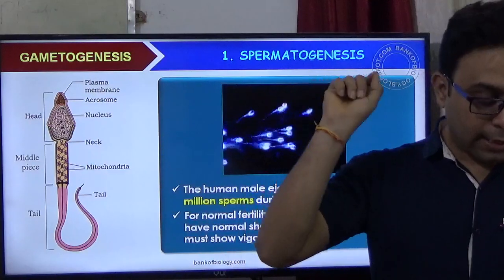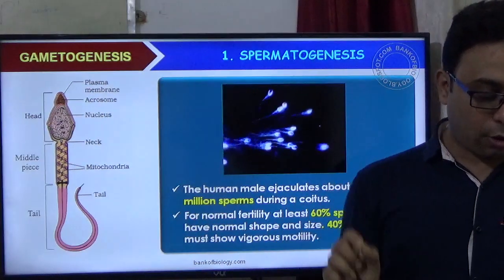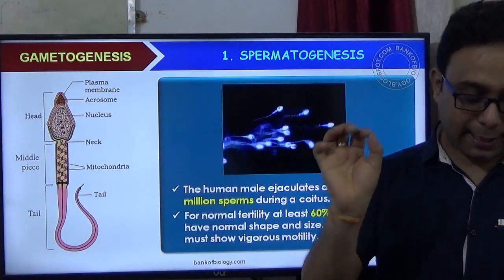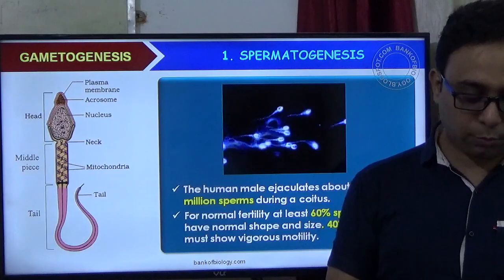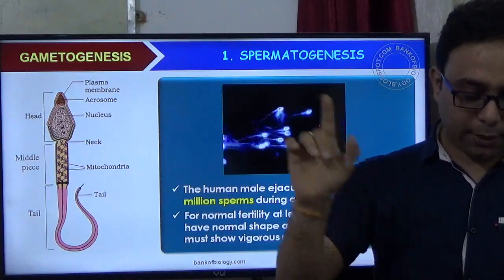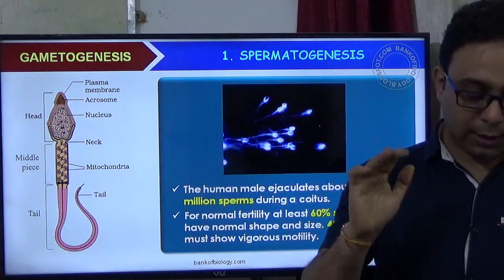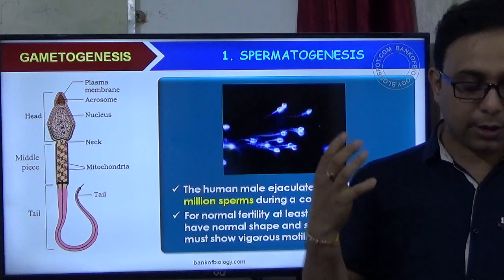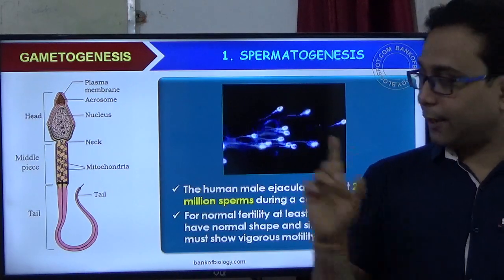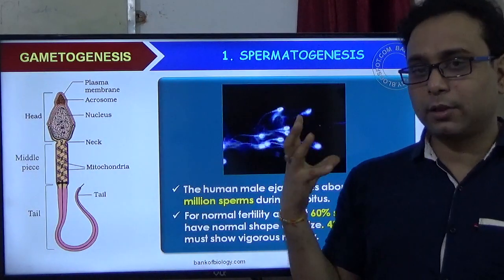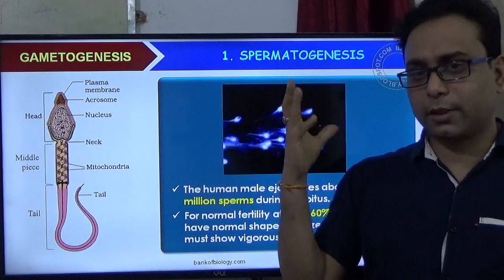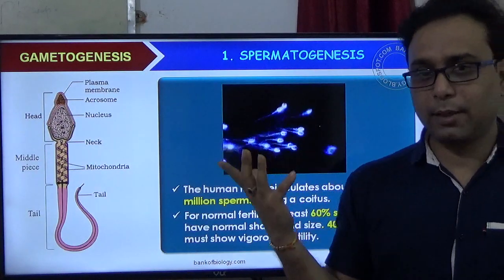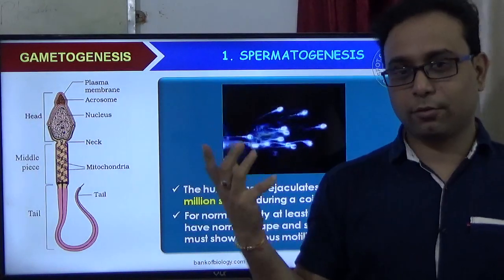MCQ Question 2: Acrosome is a type of — Option A: lysosome. Option B: flagellum. Option C: ribosome. Option D: basal body. The correct answer is Option A — lysosome — because the acrosome contains digestive/lytic enzymes, making it a modified lysosome at the front part of the sperm.